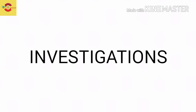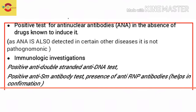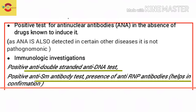The first thing to concentrate on is the presence of ANA - anti-nuclear antibodies. We should note that ANA is also detectable in certain other diseases and is not pathognomonic. Immunological investigations such as positive anti-double-stranded DNA test, positive anti-Smith antibody test, and presence of anti-RNP (ribonucleoprotein) antibodies help in confirmation.